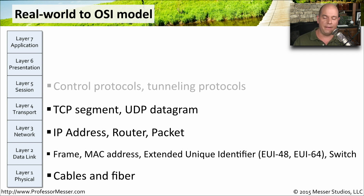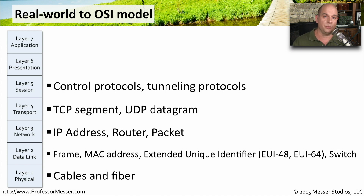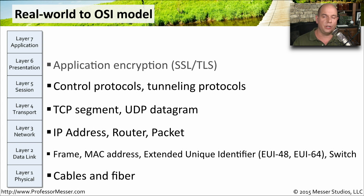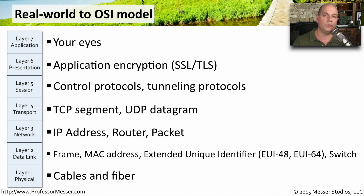Layer 5 is our session information — the control protocols and tunneling protocols we might use between two devices. Layer 6 covers application encryption and character encoding. And finally, layer 7 is what we see as the real application in front of our eyes.